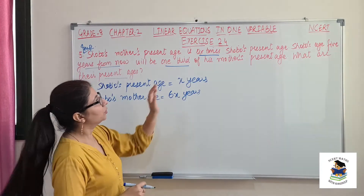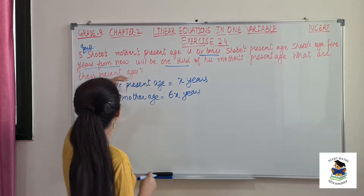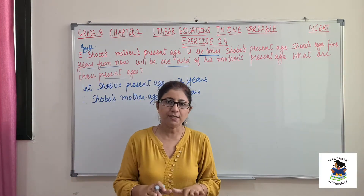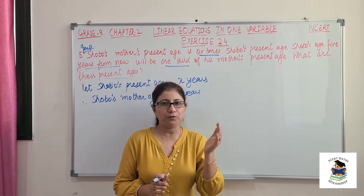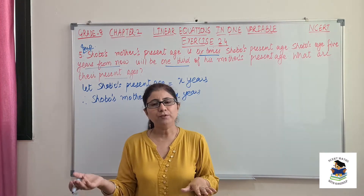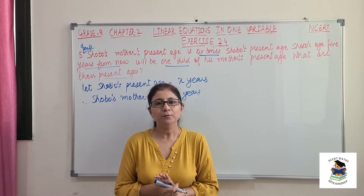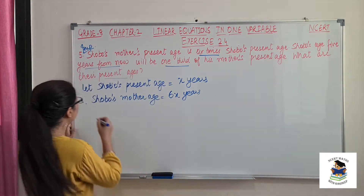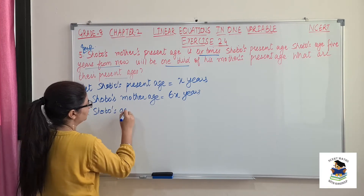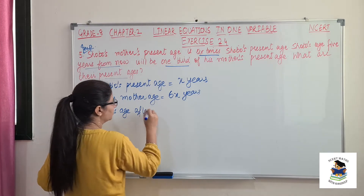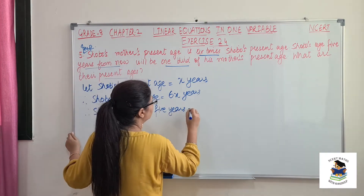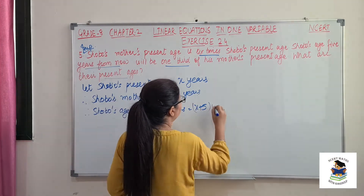Next, Shobo's age 5 years from now — if today's age is x, after 5 years what will be the age? It will be x plus 5. Suppose today someone is 20 years old, after 5 years it will be 20 plus 5. So Shobo's age 5 years from now will be x plus 5 years.